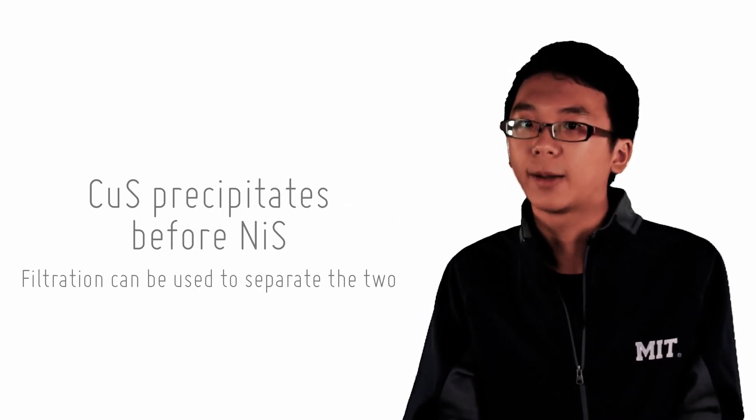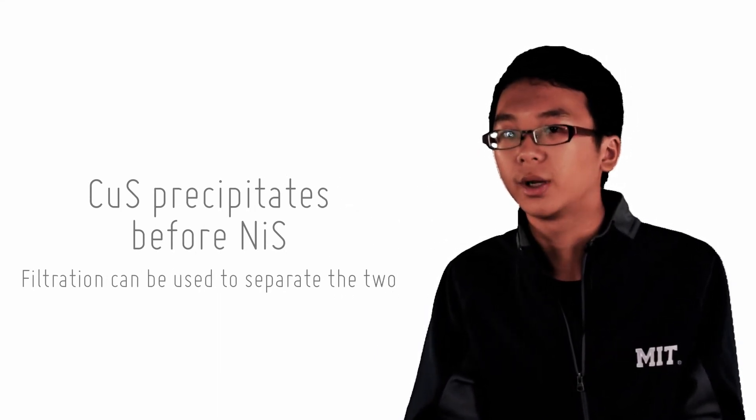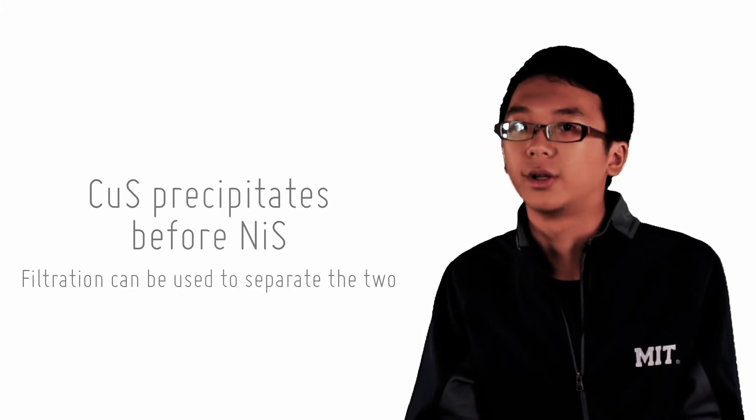For NiS, at a point where CuS precipitates, Q is still smaller than K and you can actually go calculate that.